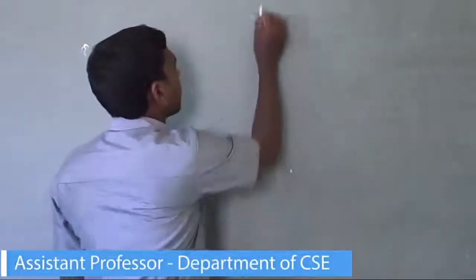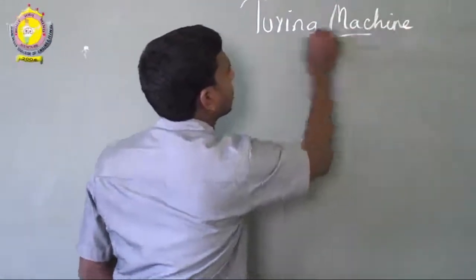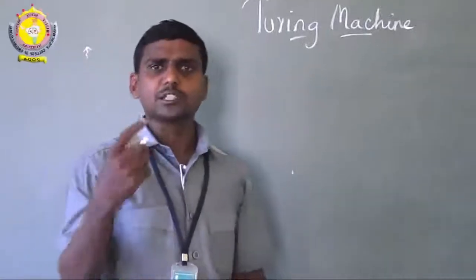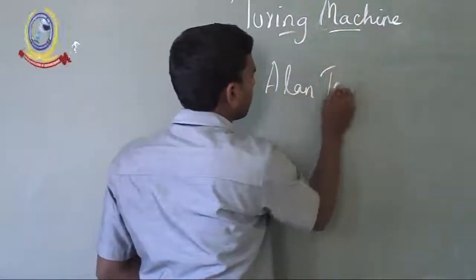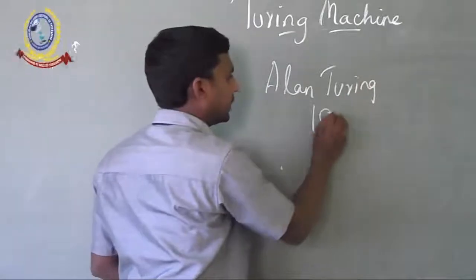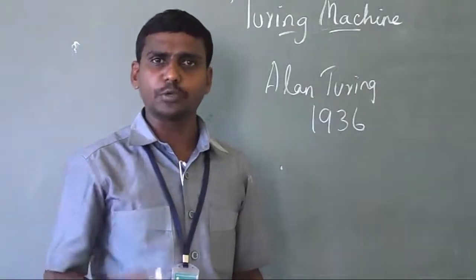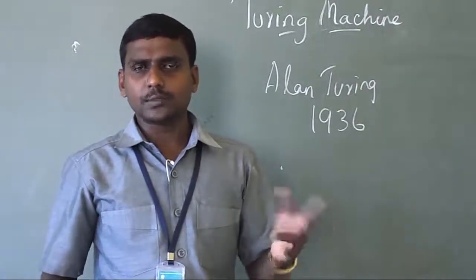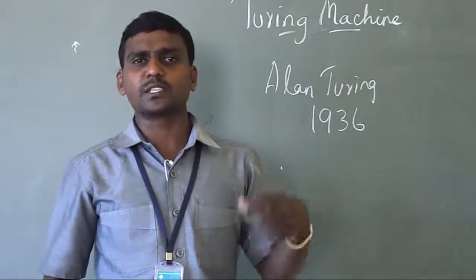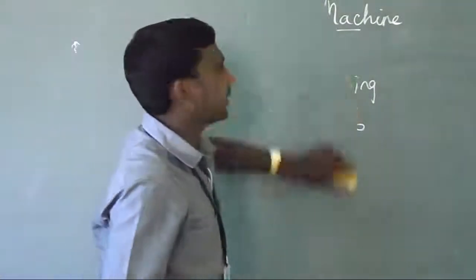Good morning students. In this session we are going to see about Turing machine. A Turing machine is an abstract model of a computer, invented by Alan Turing in the year 1936. This machine is used to compute integral functions like addition, subtraction, multiplication, and also to determine whether strings present in a language are accepted or not.